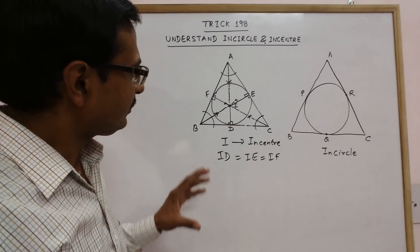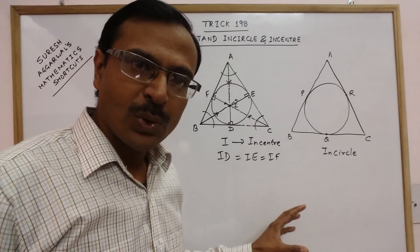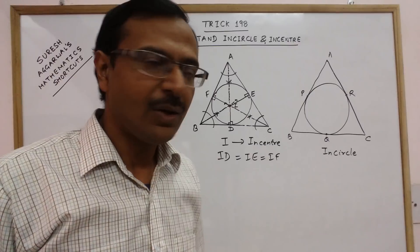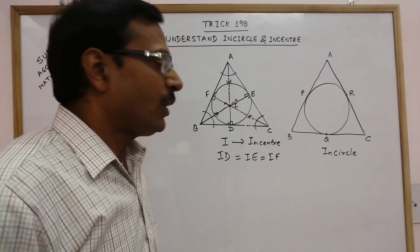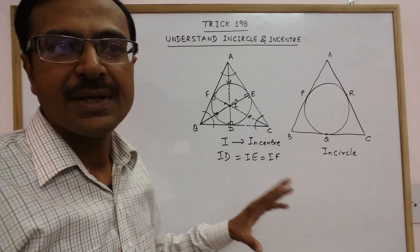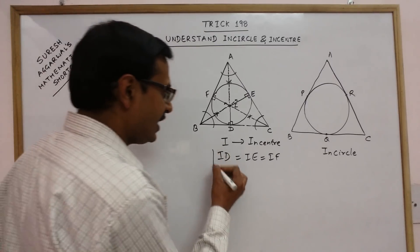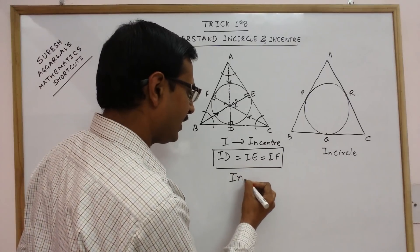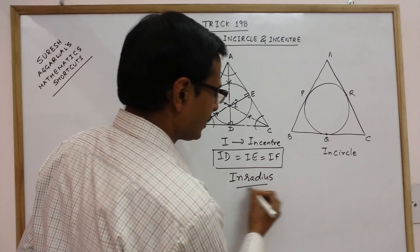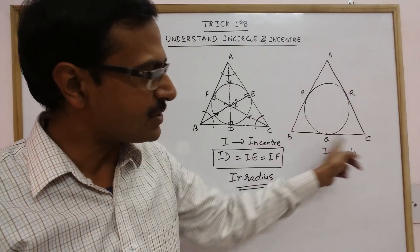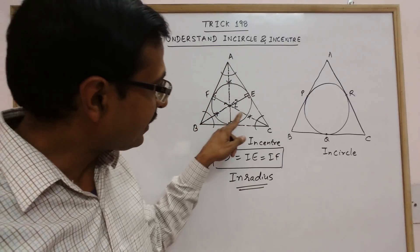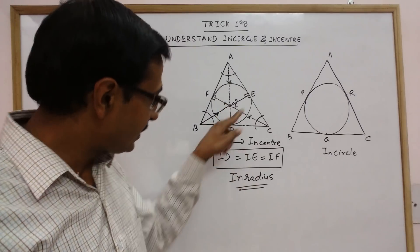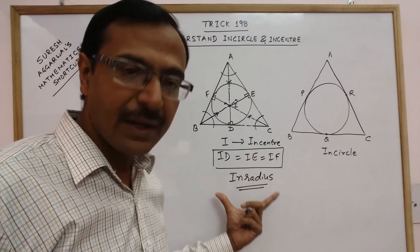So I hope this has provided you an understanding of what an incircle is and how we draw the incircle of a triangle. Once you have understood what is the incircle and the incenter, these three equal perpendicular distances are called the inradius. So: incircle is the circle touching all three sides of the triangle; incenter is the point of intersection of the angle bisectors; and inradius is the radius of this incircle.